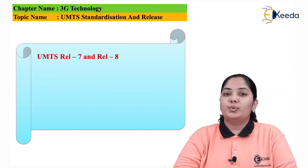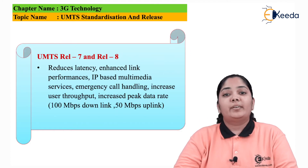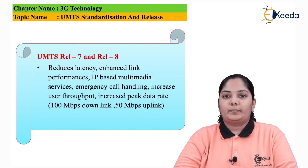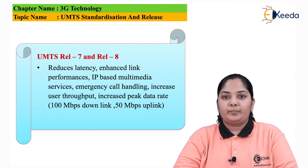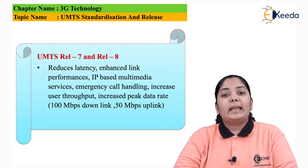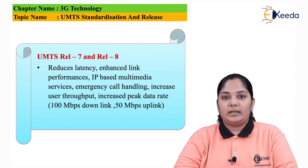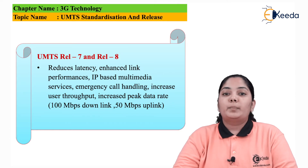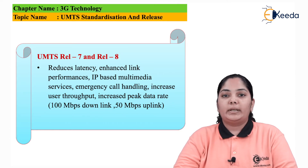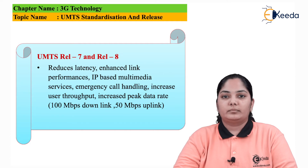The next releases of UMTS were Release 7 and Release 8. What they basically did was reduce latency. They were used in emergency call handling, enhanced data rates, IP-based multimedia services, and increased throughput, with data rates up to 100 Mbps in the downlink and 50 Mbps in the uplink direction.